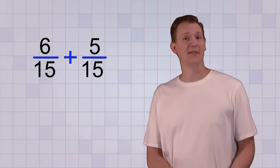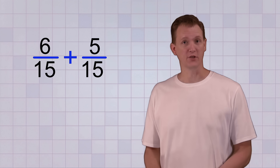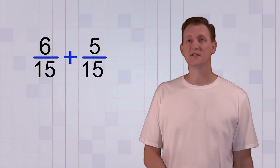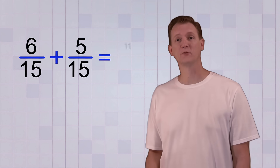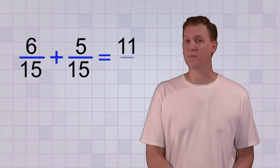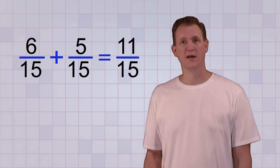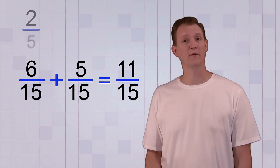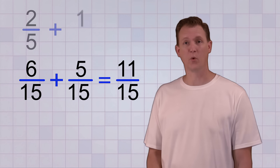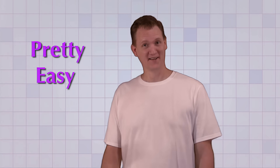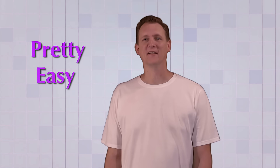Now we just add them using our procedure for adding like fractions. We add the top numbers: 6 plus 5 equals 11. And then we keep the same bottom number, which is 15. So that means the answer to 2 over 5 plus 1 over 3 is 11 over 15. Alright, let's see one more example of this method.